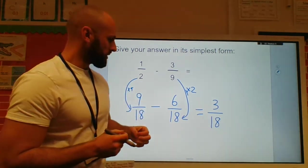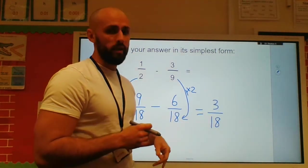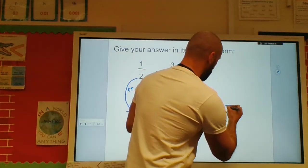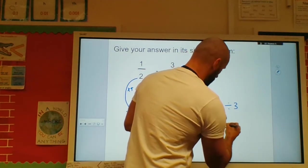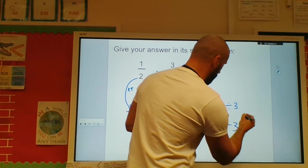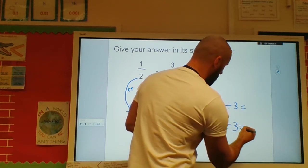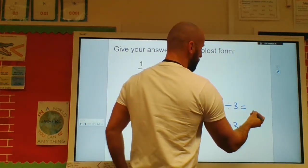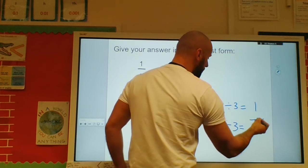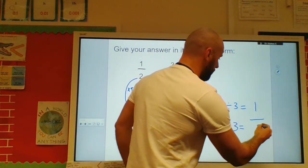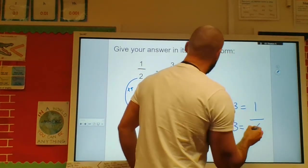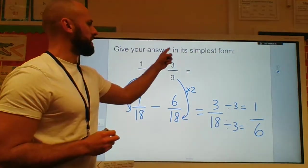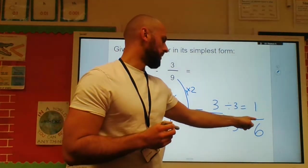Well, the answer is three. So I divide both parts by three to give me a simplified fraction. Three divided by three is one. Eighteen divided by three is six. So my answer in its simplest form is one sixth.